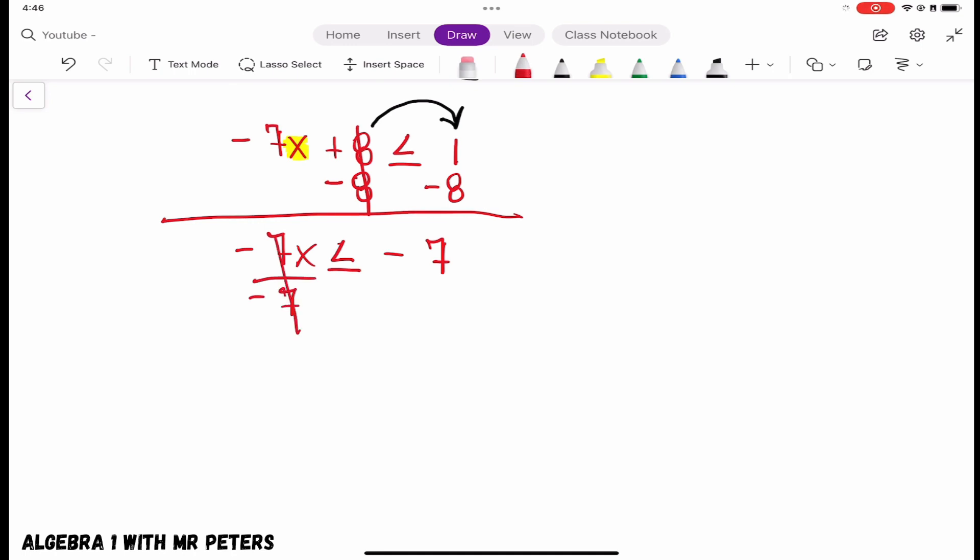So I divide by negative 7. That's going to give me x by itself. And I'm going to go on the other side and divide negative 7 by negative 7.